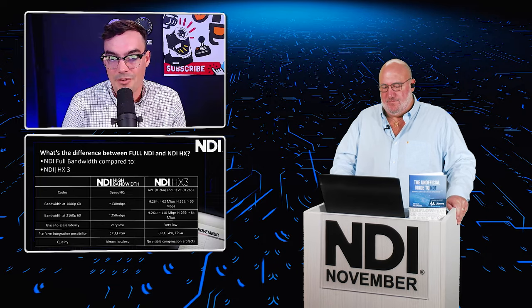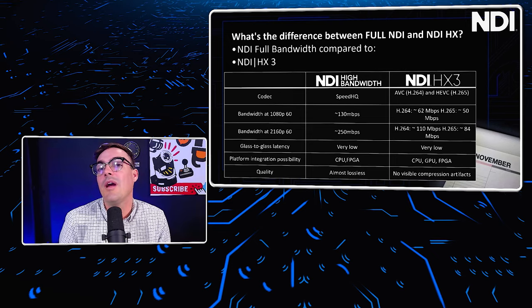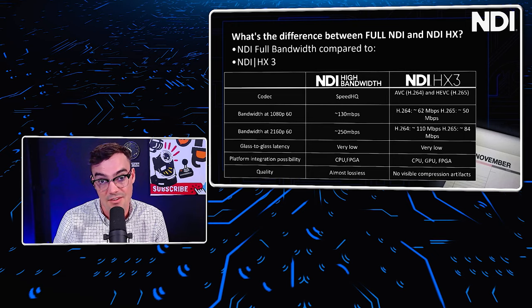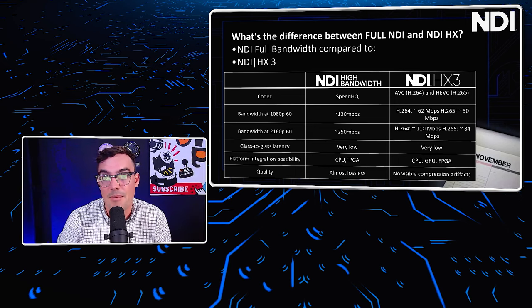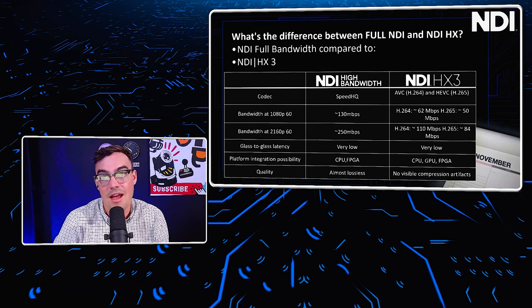There are two different versions. We've got NDI high bandwidth and NDI high efficiency — HX stands for high efficiency. The high bandwidth is almost lossless quality, whereas HX3 has really no visible compression artifacting. So for most businesses, houses of worship, or anything below television broadcast quality, NDI HX provides incredible bandwidth savings. Most customers are working on a gigabit networking setup — a gigabit is a thousand megabits. An HX3 video source is about 50 to 100 megabits per second, so you can run 10 to 20 NDI HX3 video sources on a gigabit network. On the high bandwidth side, we're looking at 150 to 250 megabits per second — you can really only do two or three high bandwidth NDI setups on a gigabit network.